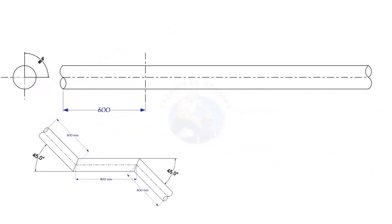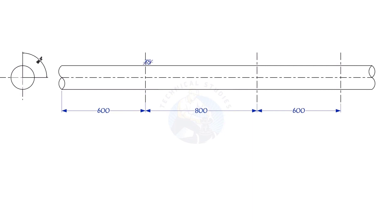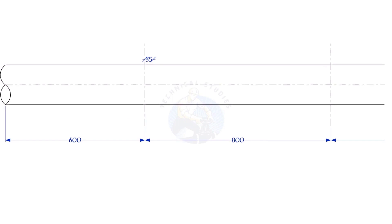Mark 600, 800, and 600 millimeters respectively, as shown. Mark 35 millimeters to the right on the top side line, and 35 millimeters to the left side on the bottom line.